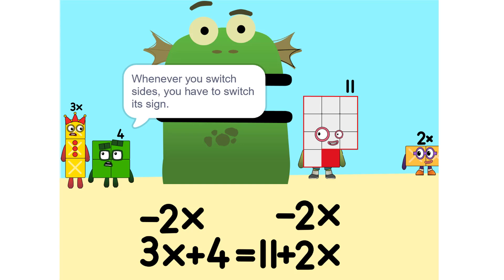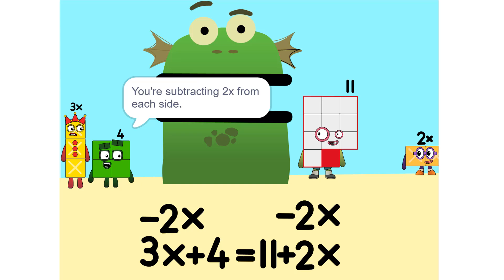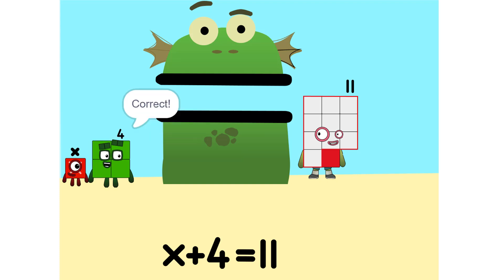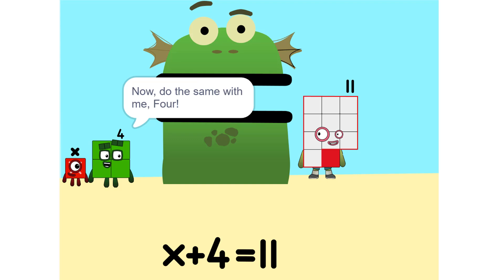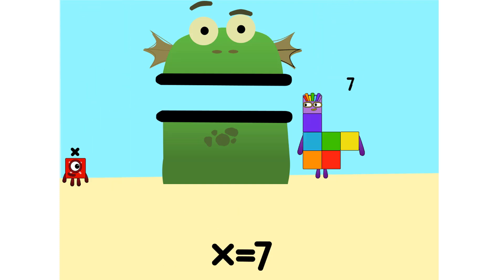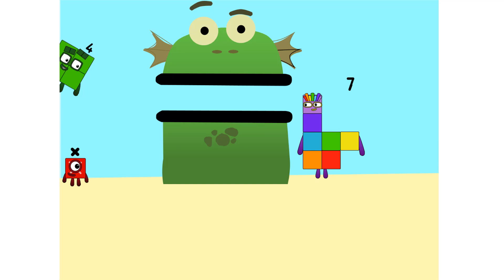Whenever you switch sides, you have to switch its sign. So if it's positive, it becomes negative and vice versa. Why? Think of it this way — you're subtracting 2X from each side. So it'd just be 1X or X. Correct. Now do the same with me. 4. 11 minus 4 is 7. So now what do I do? What's there left to do? X equals 7.